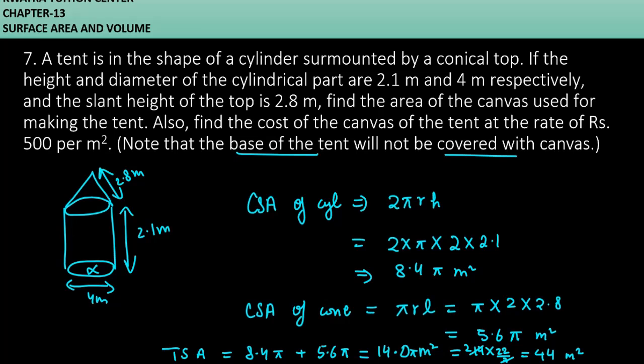Now they are asking you to find the cost. Cost is going to be very simple. Look, cost of 1m² is how much you have given? 500 rupees. So if our total area is 44m², then what do we do? 44 times 500. So yes, answer will be 22,000 rupees. So yes, this is the answer for question number 7.